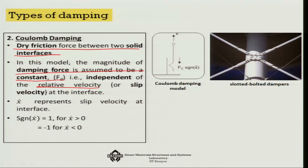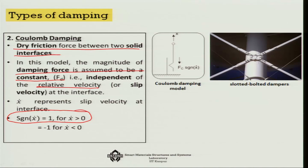However, a signum function governs the direction — positive for positive velocity and negative for negative velocity. That is how the damping force changes its direction and sign in Coulomb damping. These are the two very important damping types: viscous damping and Coulomb damping.